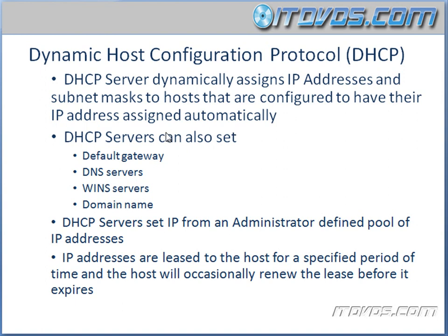Not only can DHCP servers set the IP address and subnet mask, they can also set the default gateway on a host, DNS servers, WINS servers, domain names, and there are a lot of other options that DHCP servers can set. We can actually use Cisco routers as DHCP servers. In the real world, we're probably not going to do that because we're going to use a real DHCP server so that we can have more options that we can set on our hosts.